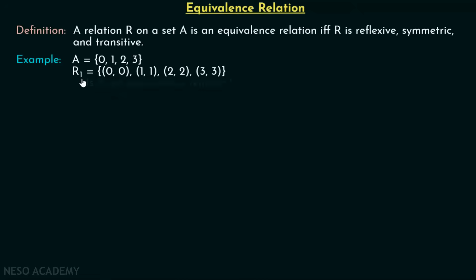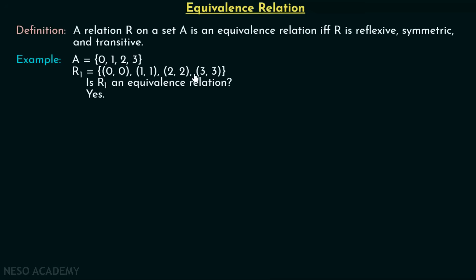Is R1 an equivalence relation? Obviously, this relation is an equivalence relation. This relation is reflexive because for every element A belonging to the set, we have an ordered pair of the form (A, A) in R1. We have (0,0), (1,1), (2,2), and (3,3). So this relation is reflexive.